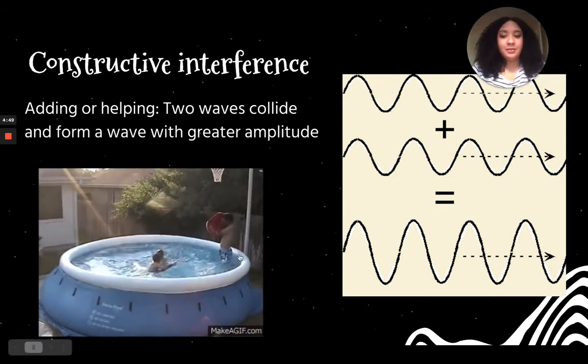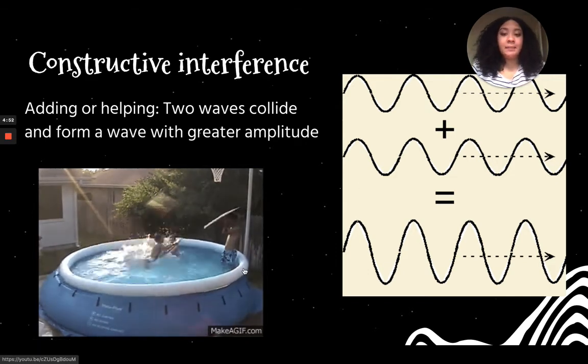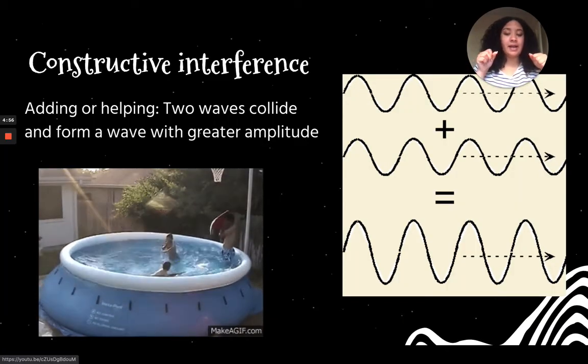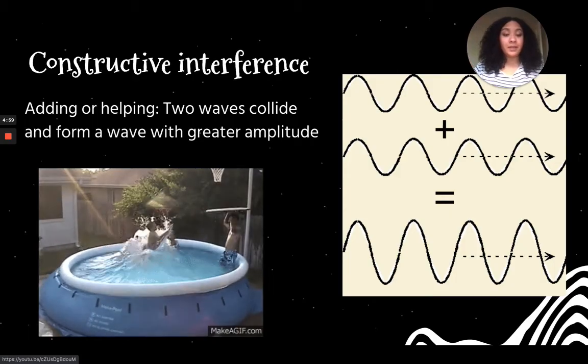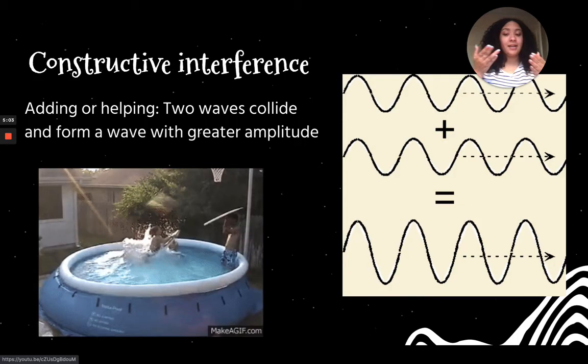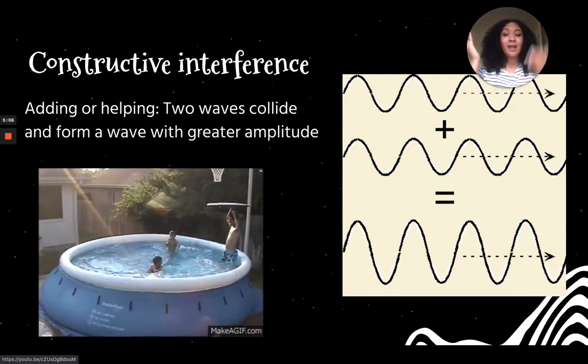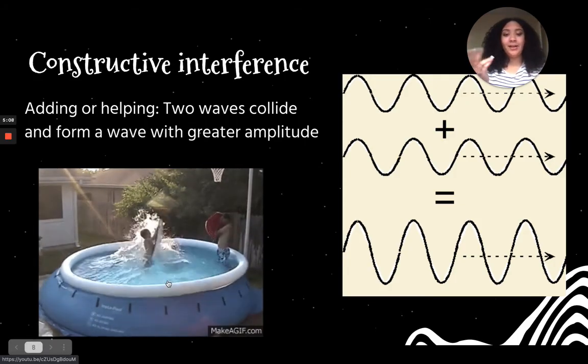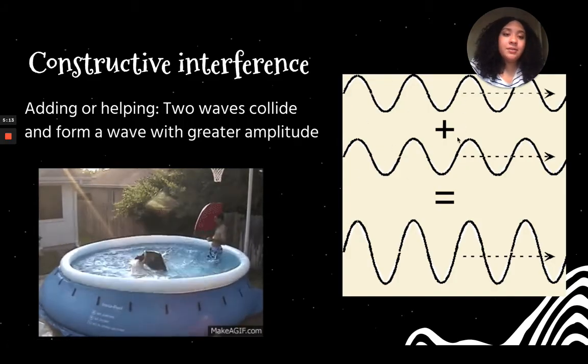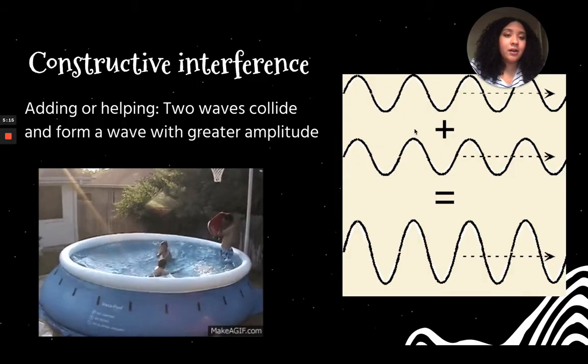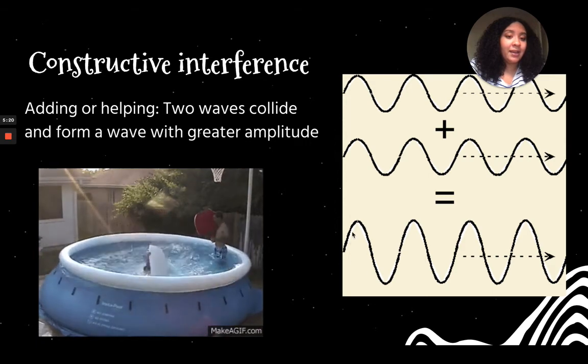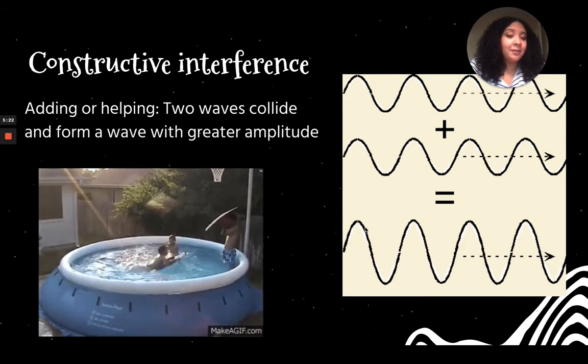This GIF right here is showing that if you bounce up and down in a wave pool, if you bounce up and down at the same time, those waves can kind of form together to make an even bigger wave, which is what is happening right here. And we can see it in a diagram too. These two wavelengths are the exact same. So when they add together, they're making an even bigger amplitude, an even greater wavelength.